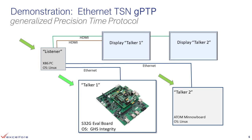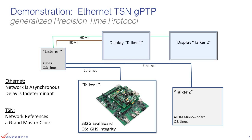It should be noted there is no effort in this configuration to synchronize the generation of the displays. Ethernet is an asynchronous network and so delay will be indeterminate. As there is no master clock, the two devices will be generating pulses at their own pace and transmitting them over the network. When we implement GPTP, we will have a grand master clock and both devices will be generating and transmitting at a common pace.